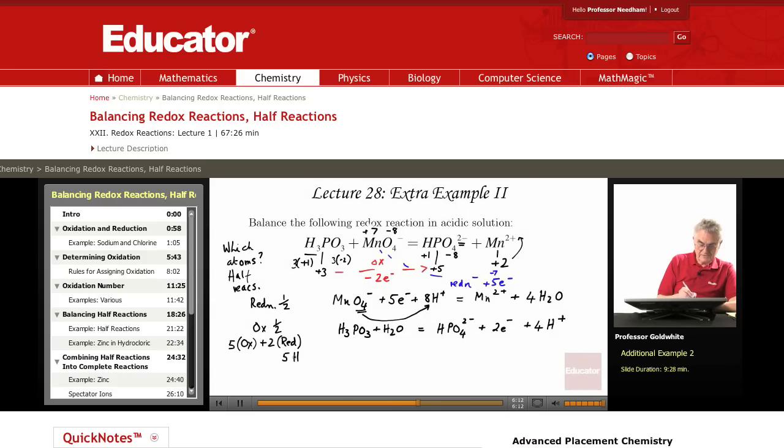5 times the oxidation reaction plus twice the reduction half reaction. And we'll put everything in. And on the right hand side, 5 times the oxidation half reaction.